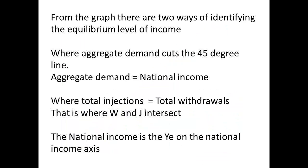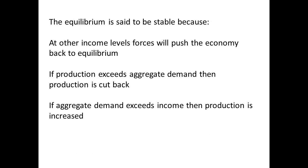Let us just recap. There are two ways of identifying the equilibrium level of income: the first is where the aggregate demand line intersects with the 45-degree line, and the second is where withdrawals and injections intersect. Remember, YE is the equilibrium level of income. At income levels other than YE, economic forces will push the economy back to equilibrium. If production exceeds demand, then production is cut back; if demand exceeds income, then production is increased.